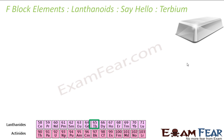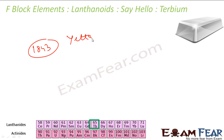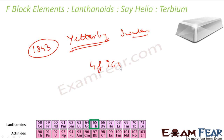Terbium is a silvery-white rare earth metal that is malleable, ductile, and hard. It is used in fluorescent lamps, TV tubes, and sonar systems. It was discovered in 1843 and named after the village of Ytterby in Sweden. Its electronic configuration is 4f⁹ 6s².